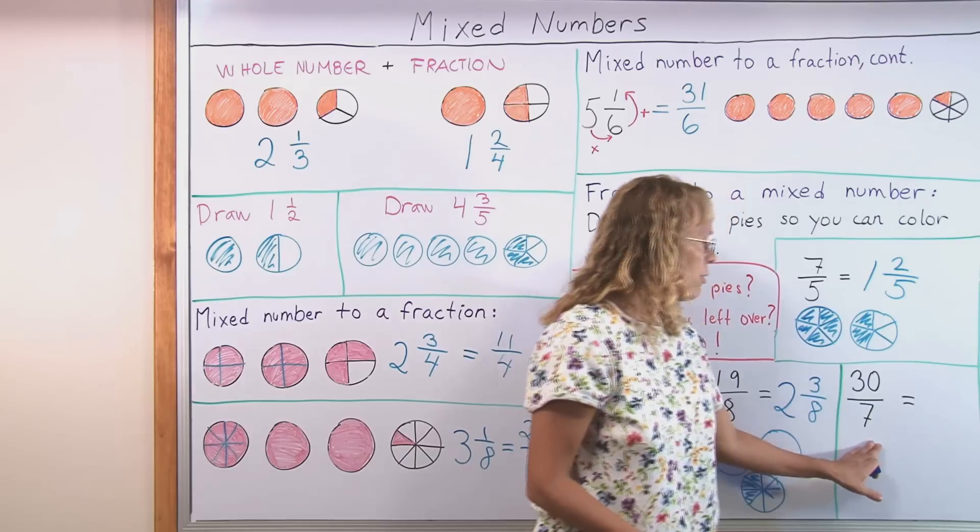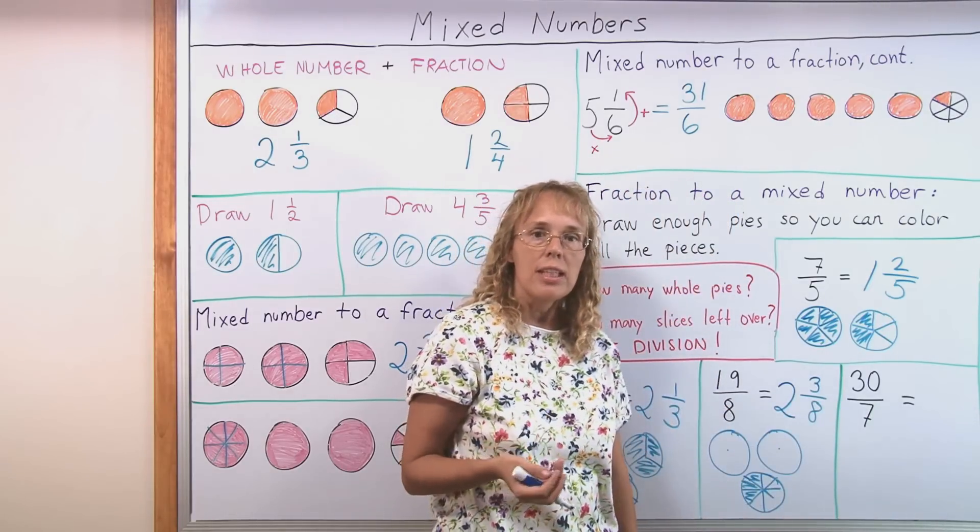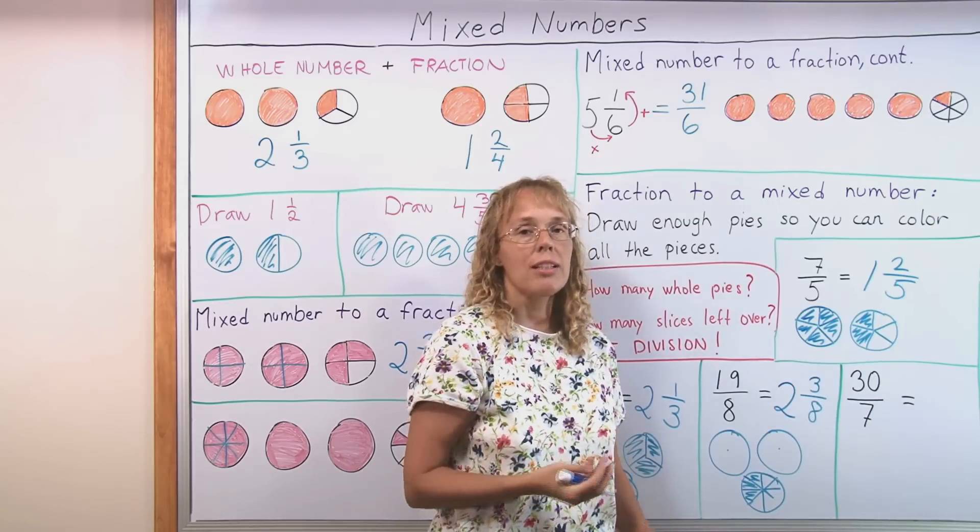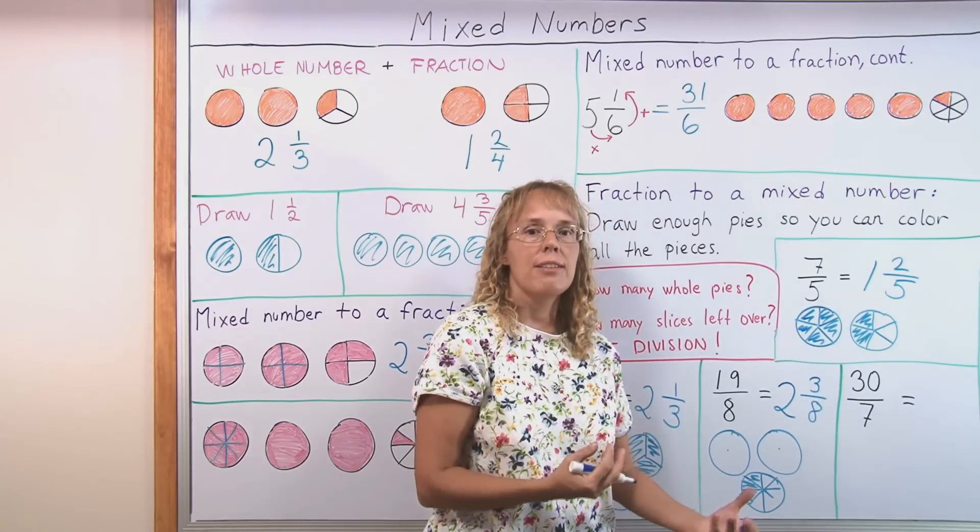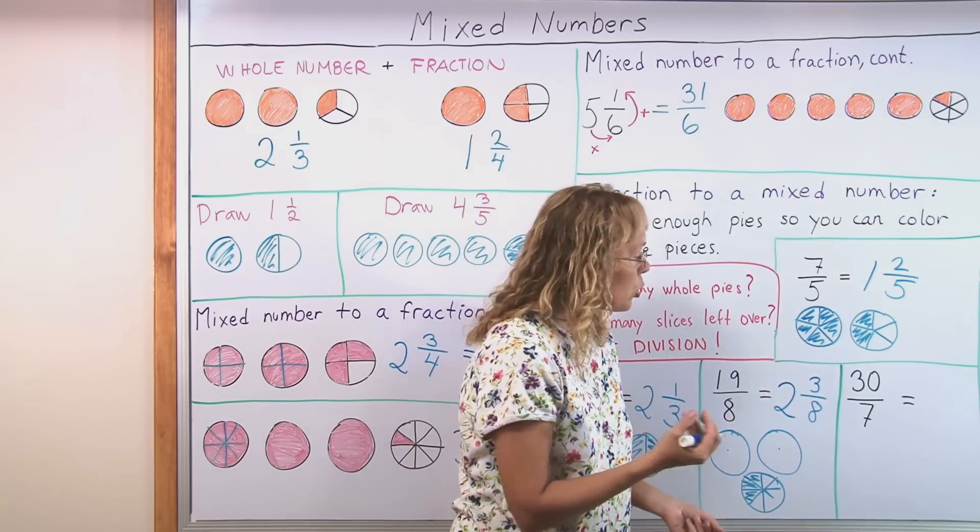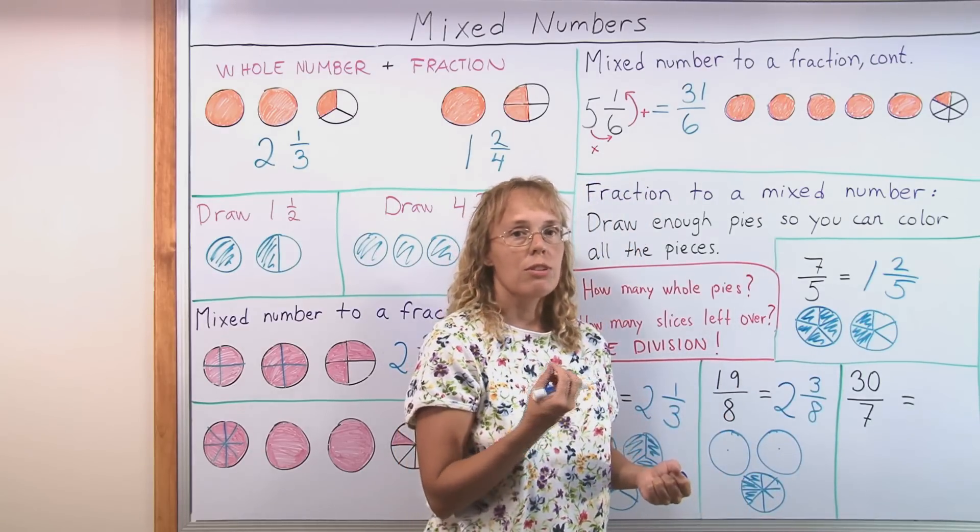Or 30 over 7. The fraction 30 sevenths. Just think of it as a division. Think of it as this fraction line as a division symbol. And divide. 30 divided by 7. And that is 4. And then we have 2 left over. Or remainder 2.